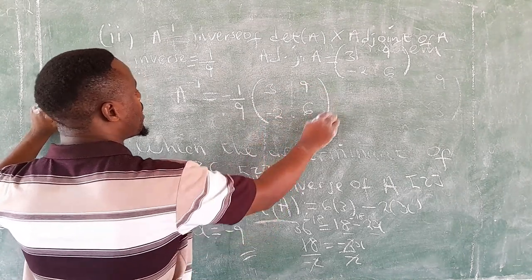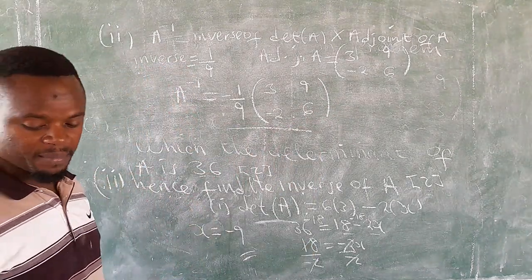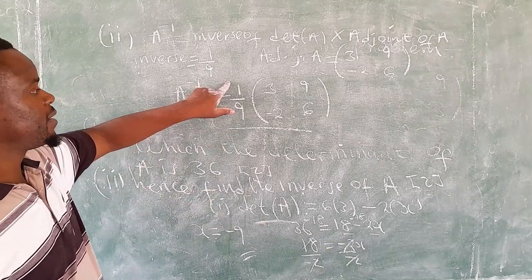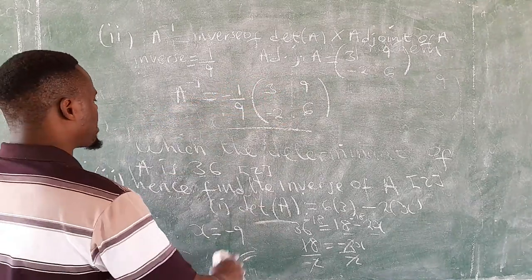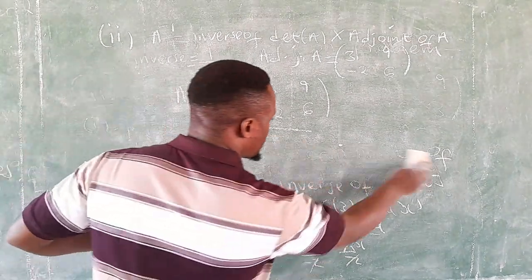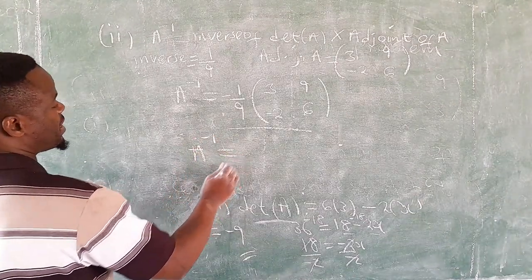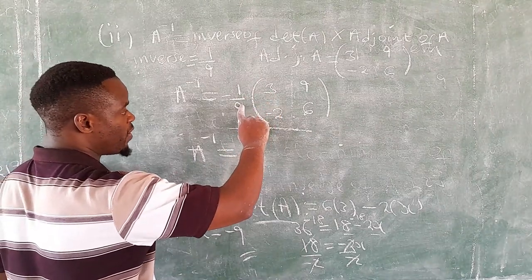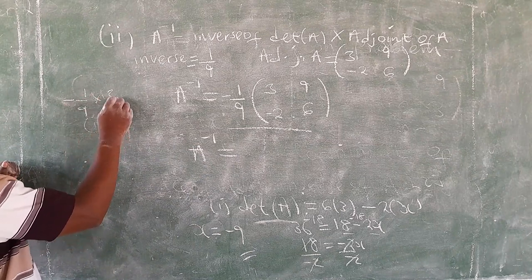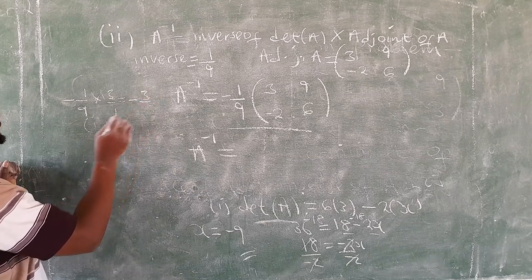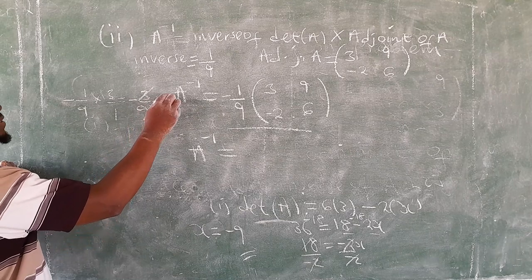We can end it here - nobody's going to penalize you for ending here - or you can simplify this by multiplying by each and every element on the inside of brackets. Let's take a while and see if we can work it to the end. So the inverse of matrix A: negative 1 over 9 multiplied by 3. This one looks like 1 over 9 multiplied by 3 over 1. That would be negative 3 over 9. We can simplify this and then we have negative 1 over 3.